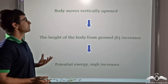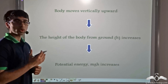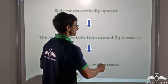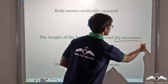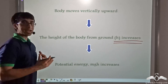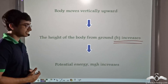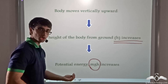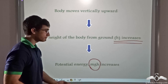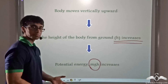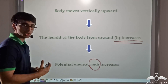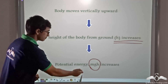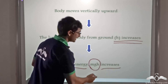When the body moves vertically upwards, the height increases — h increases. In the formula mgh, since m is constant for a body and g is also constant, if h increases then the potential energy will increase.